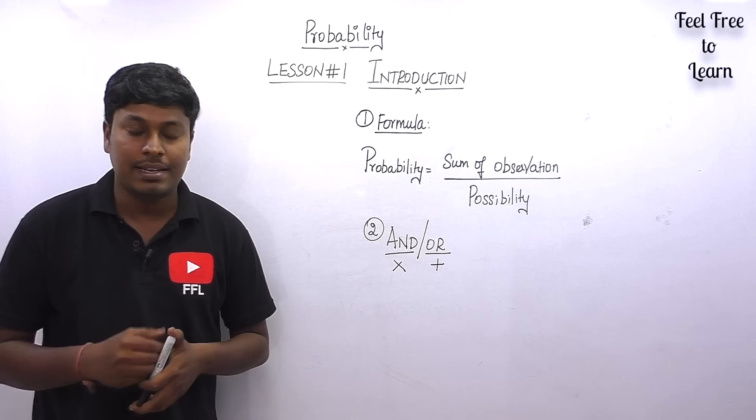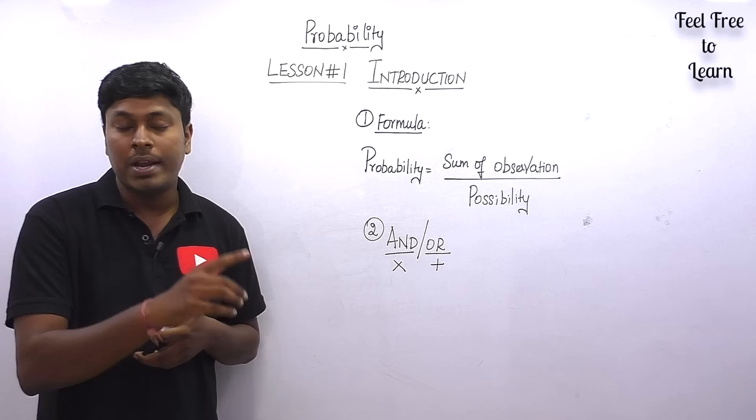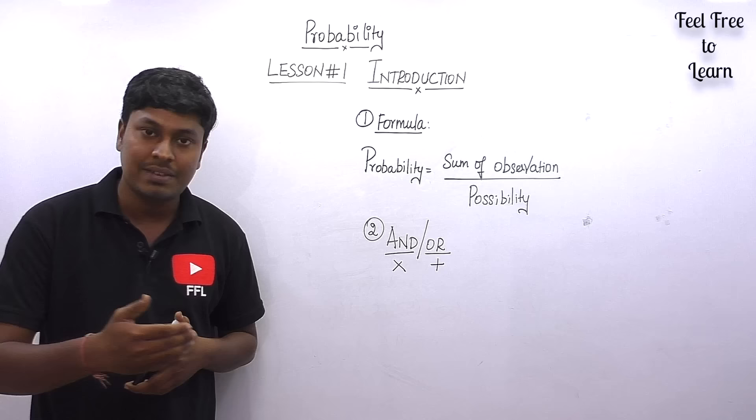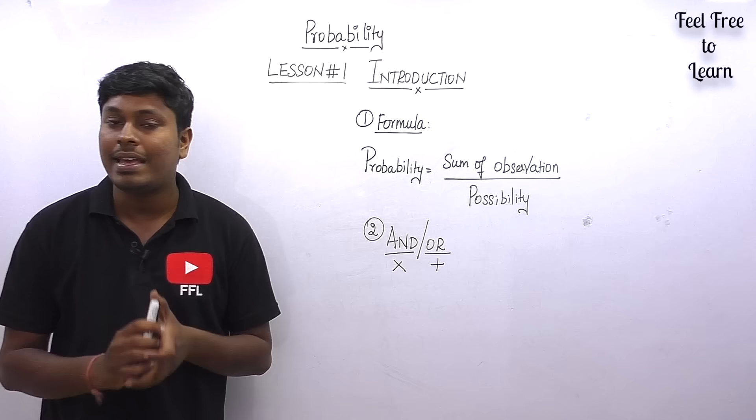In lesson number two we will solve questions based on coins, lesson number three is based on dice, lesson number four on cards, lesson number five on the color ball concept with one bag and two color balls, lesson number six covers one bag with more than two color balls, and lesson number seven covers miscellaneous questions.